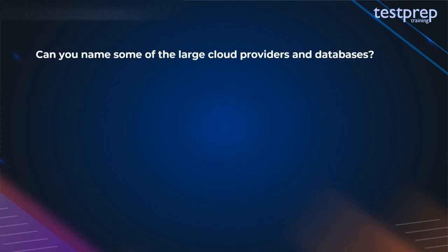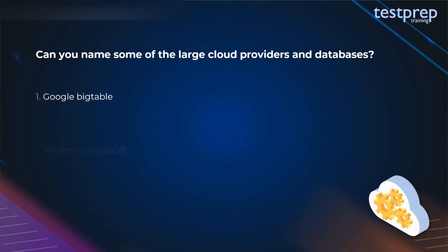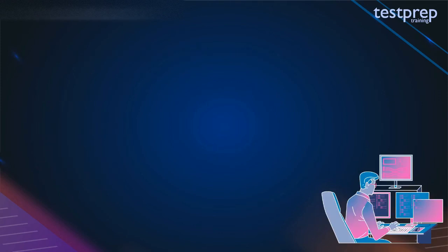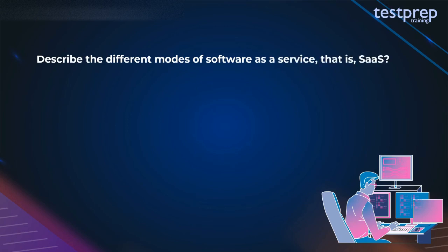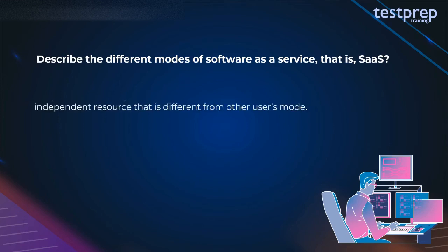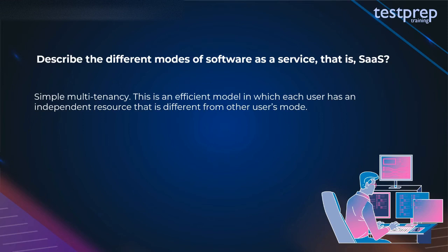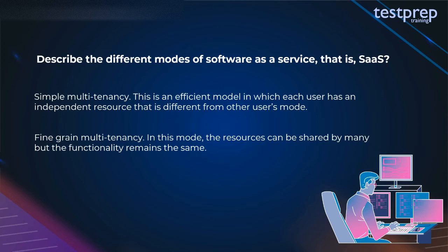Question 31: Name some of the large cloud providers and databases. First, Google BigTable; second, Amazon SimpleDB; third, cloud-based SQL. Question 32: Describe the different modes of Software as a Service (SaaS). There are two modes: first, simple multi-tenancy — an efficient model in which each user has an independent resource different from other users. Second, fine-grained multi-tenancy — in this mode the resources can be shared by many but the functionality remains the same.